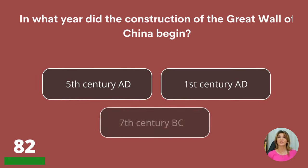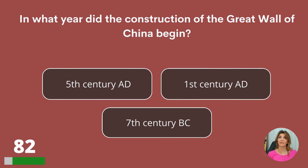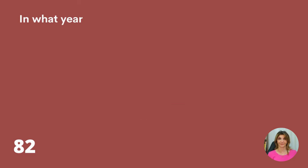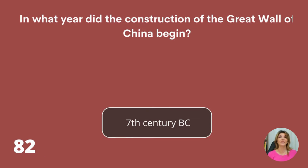In what year did the construction of the Great Wall of China begin? The 5th century AD, 1st century AD, or 7th century BC? 7th century BC.